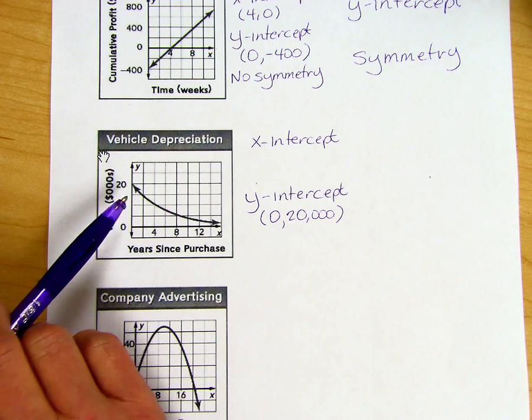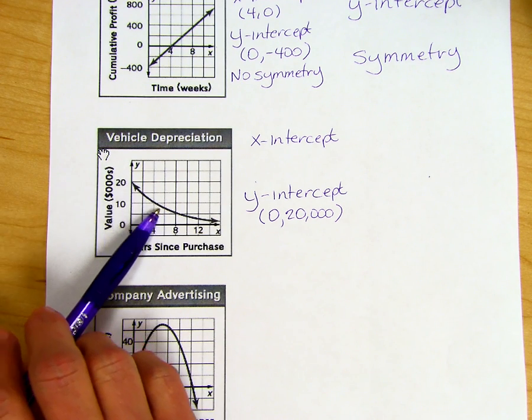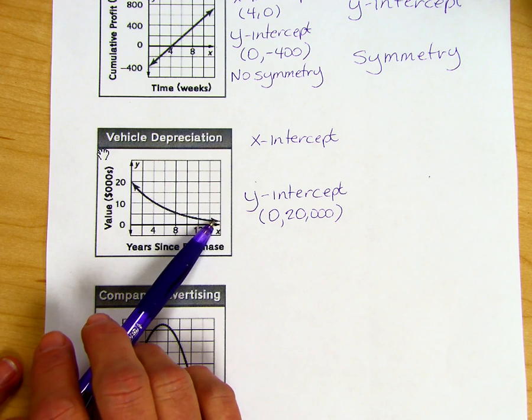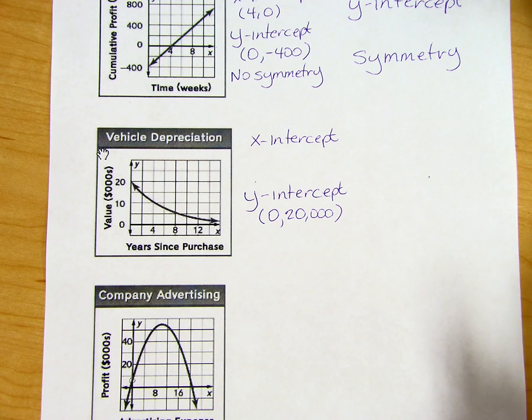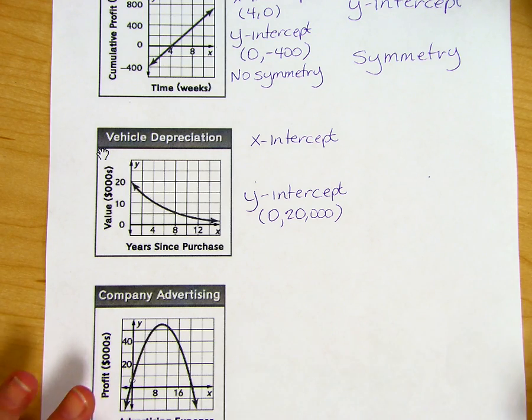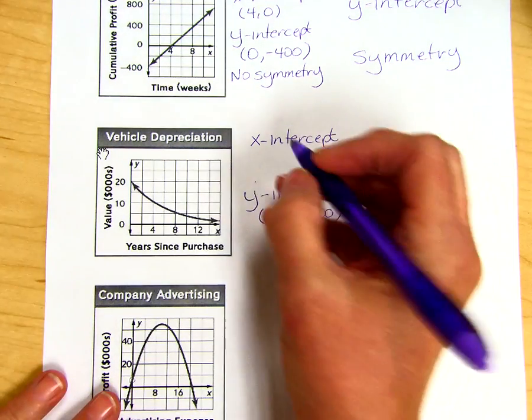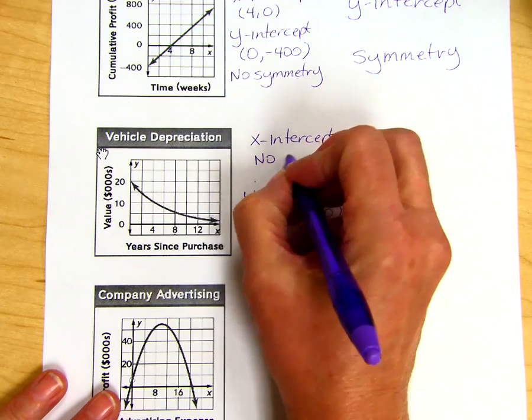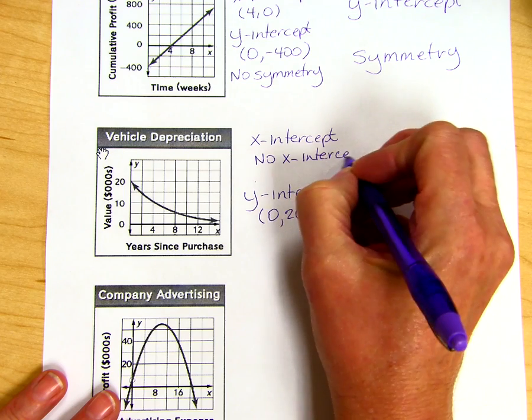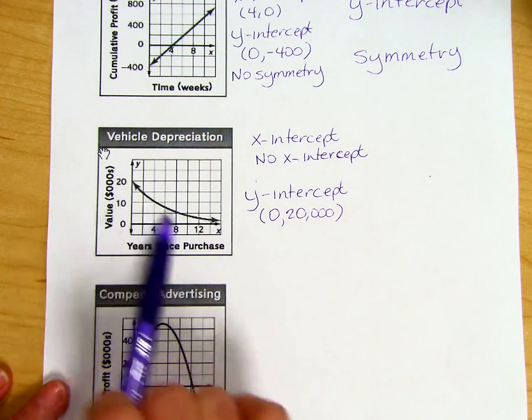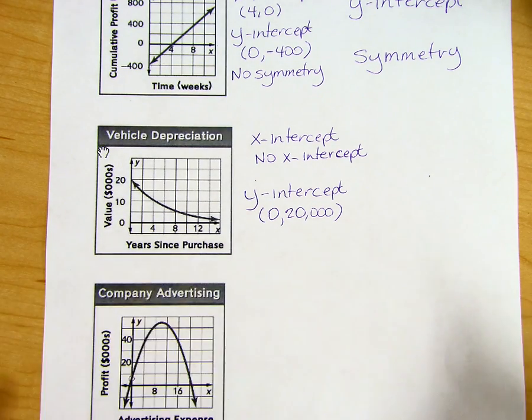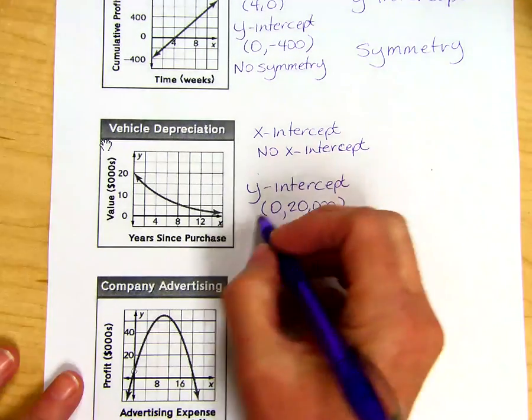Over time, the value of the car depreciated. It went down. You can see how it curves down and then it looks like this is getting pretty flat and becoming very close to parallel with the x-axis. That is because the vehicle will never reach $0 because something on the vehicle can always be sold - the axle, the engine, headlights, whatever it can, so it can have some sort of value. So there will be no x-intercept for this one because there will always be a value. It will never reach $0. If I try to fold this to make some sort of symmetrical design, it's not going to happen. So there's also no symmetry here.